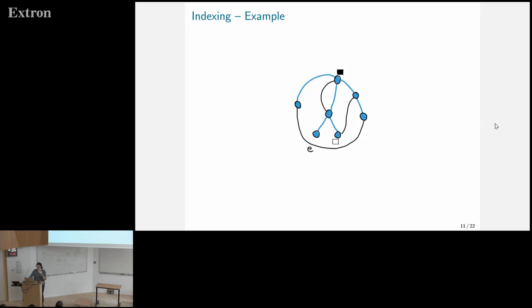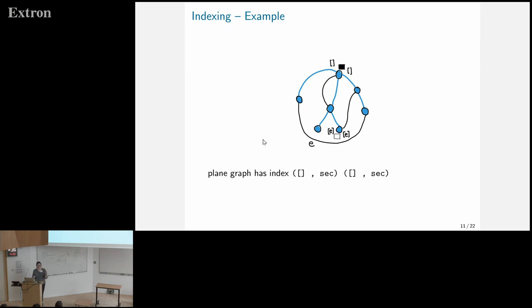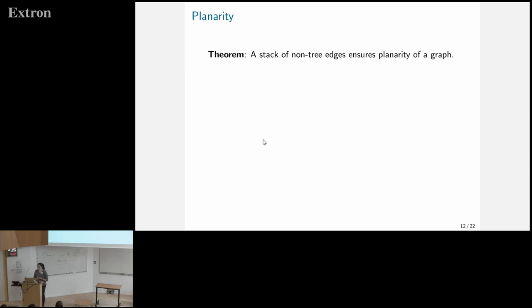Just for an example about the index: we had this example where we pushed and popped one edge E. If I look at this sector, its index now contains this edge E. To say when things are planar is when the tree is indexed by the empty stack. The claim is that using a stack for these additional structures on the tree ensures that the graph is planar.